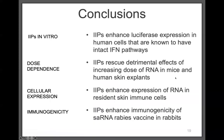In summary, interferon inhibiting proteins enhance luciferase expression in human cells with an intact interferon pathway. They rescue detrimental effects of increasing RNA dose in mice and human skin explants. They enhance expression of RNA in resident skin immune cells, as well as enhancing the immunogenicity of a saRNA rabies vaccine in rabbits.